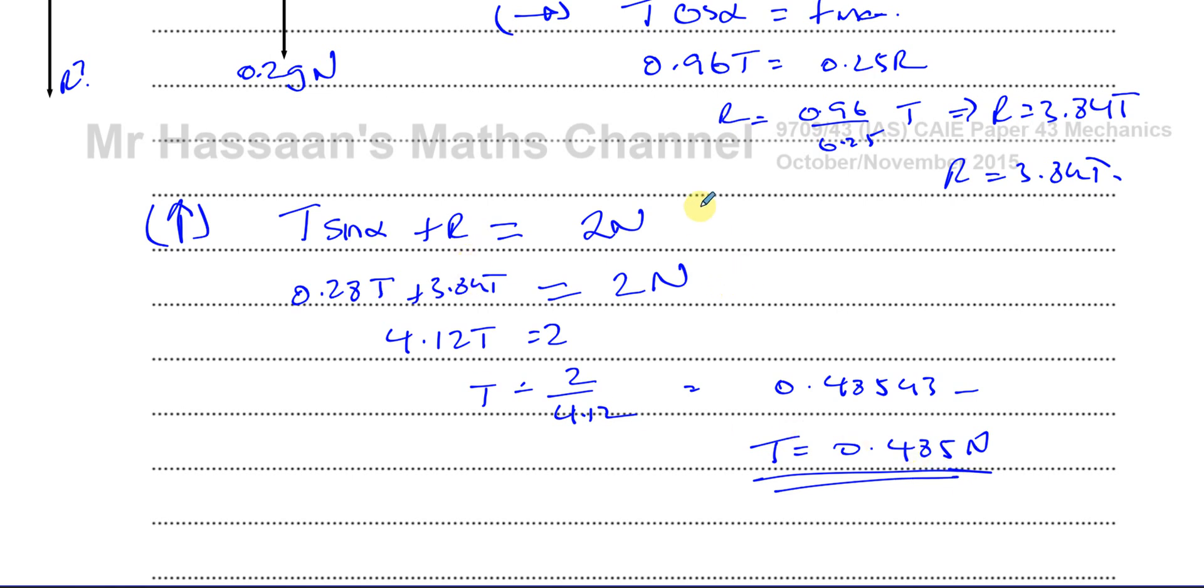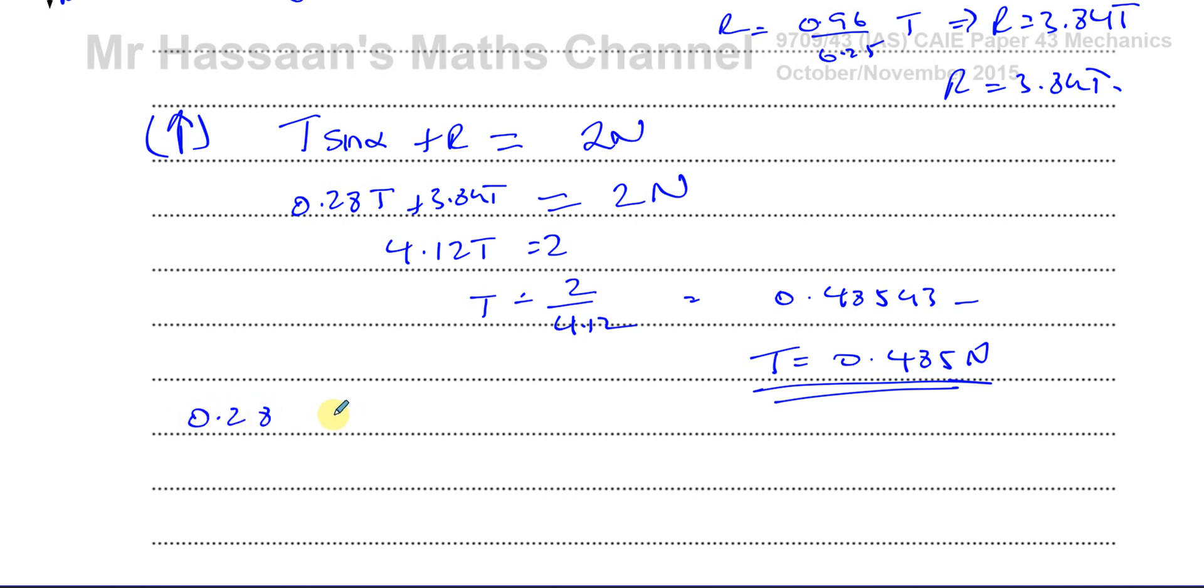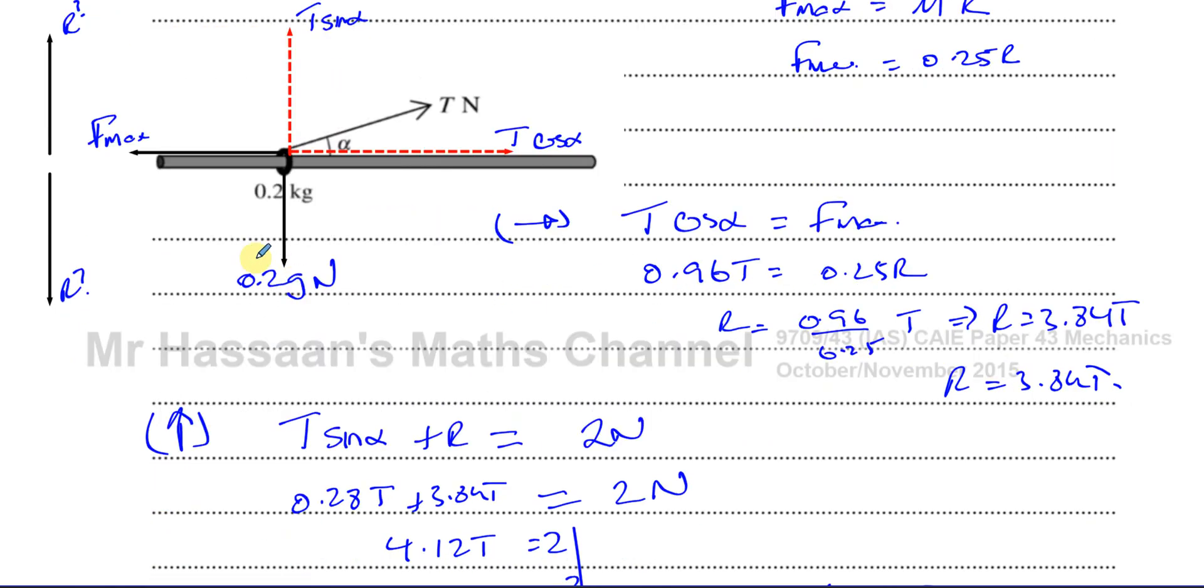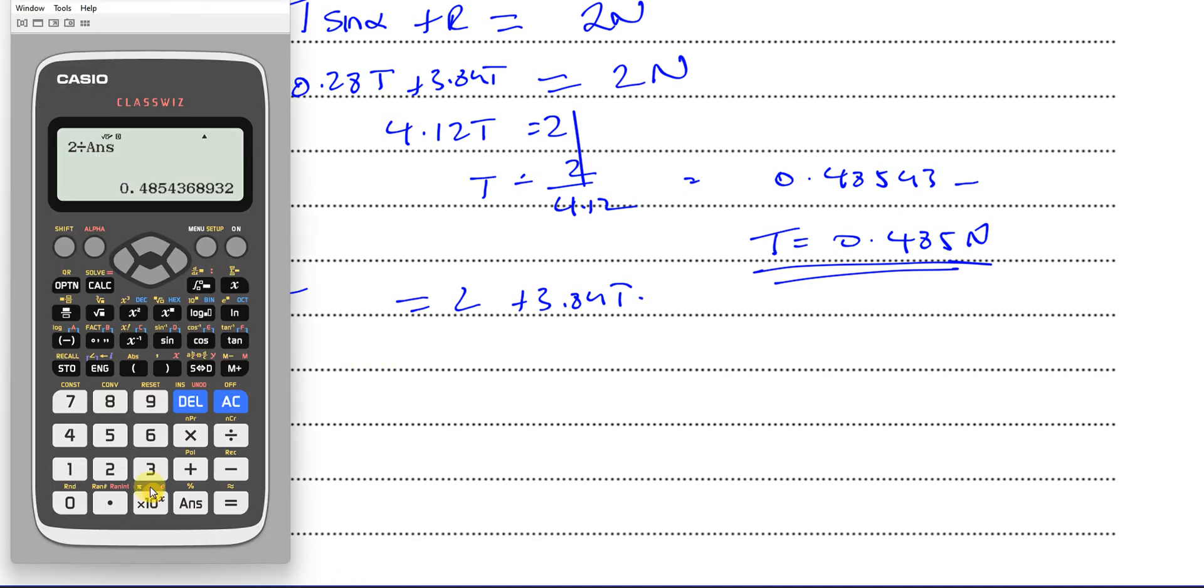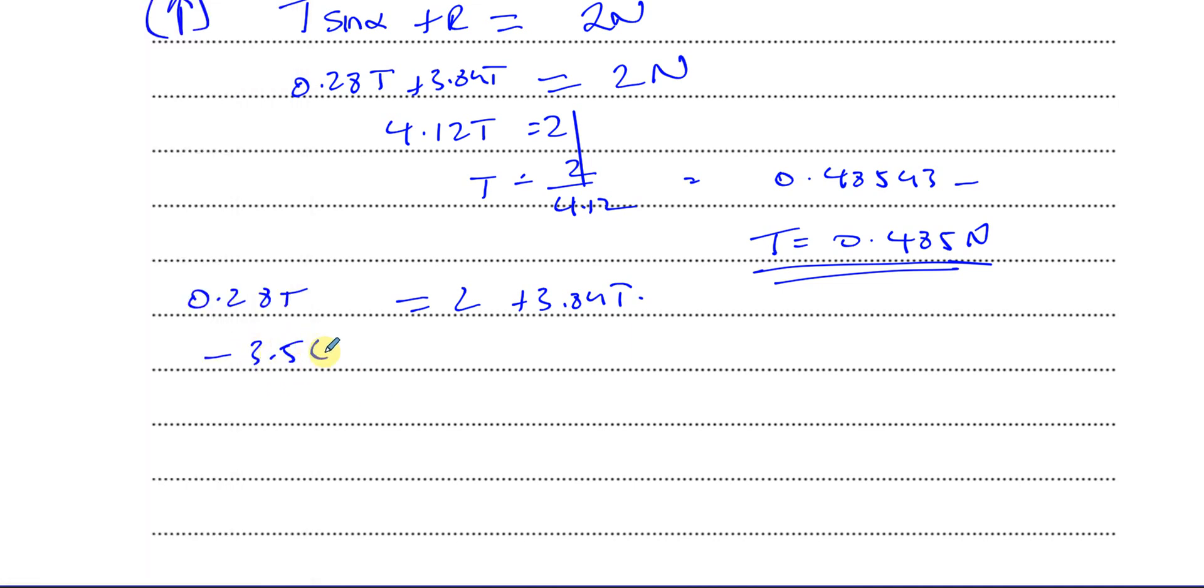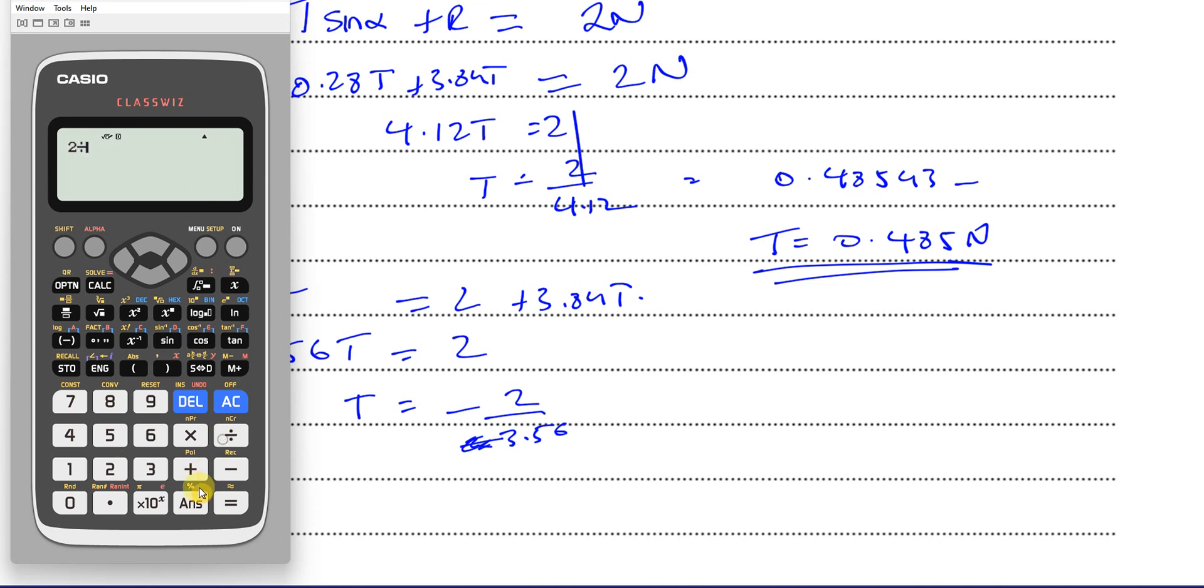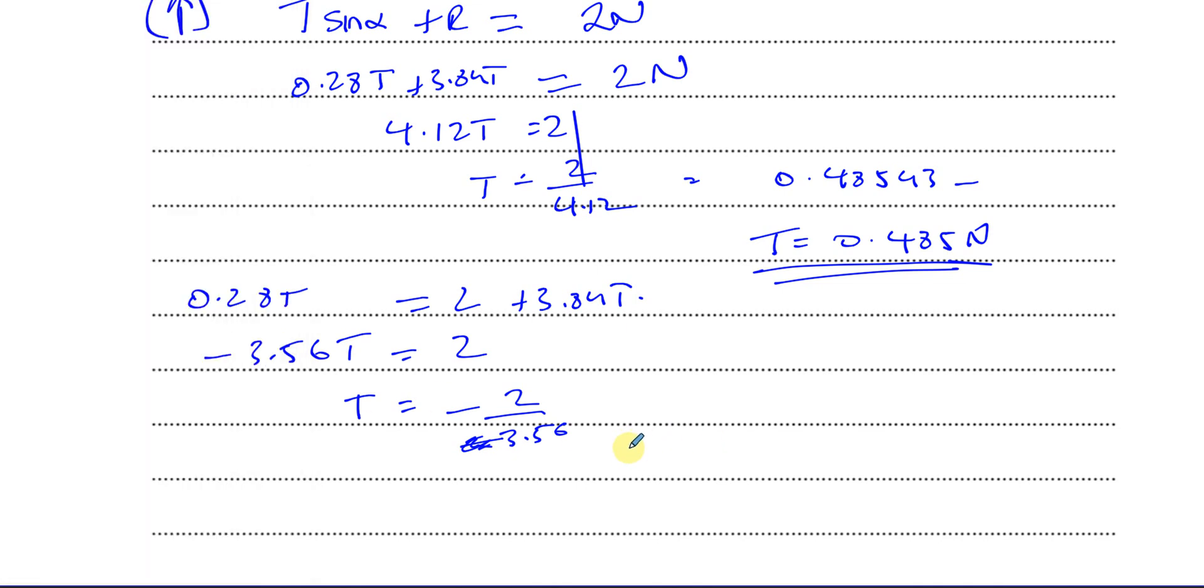Now if I had put the 3.84 on this side, just imagine I had done that. I'd got to 0.28 T plus two newtons. Supposing I said, let's just put it on this side, then I'd have plus 3.84 T on this side. That means the reaction force would be acting downwards. If the reaction force was acting downwards, it would be on the same side as the weight. But then I would end up subtracting, so I'll have 0.28 minus 3.84, that would give me minus 3.56 T equals two. So T will therefore be a negative value, two divided by minus 3.56, which will give you something which doesn't make sense.